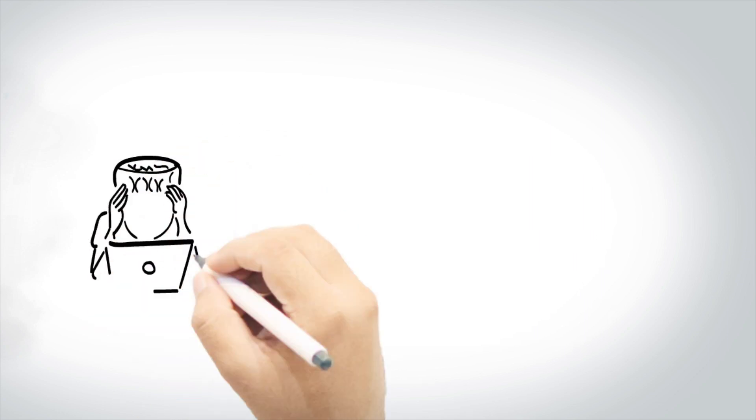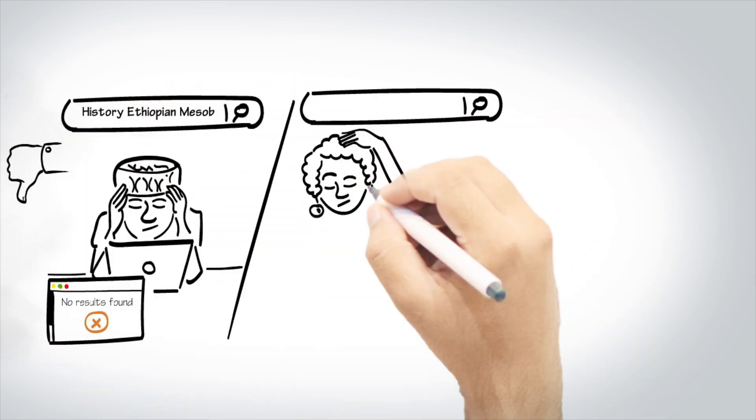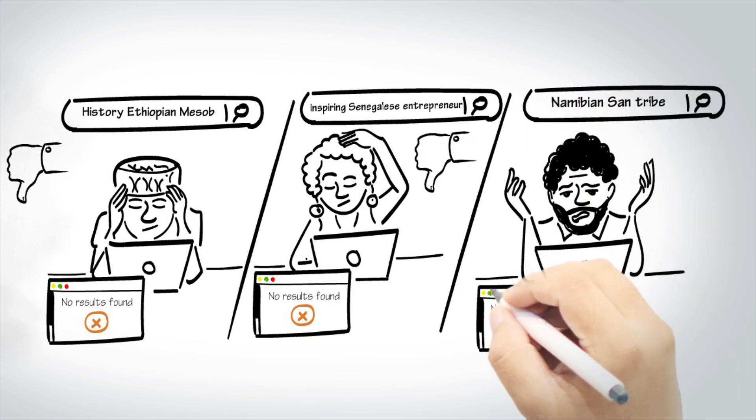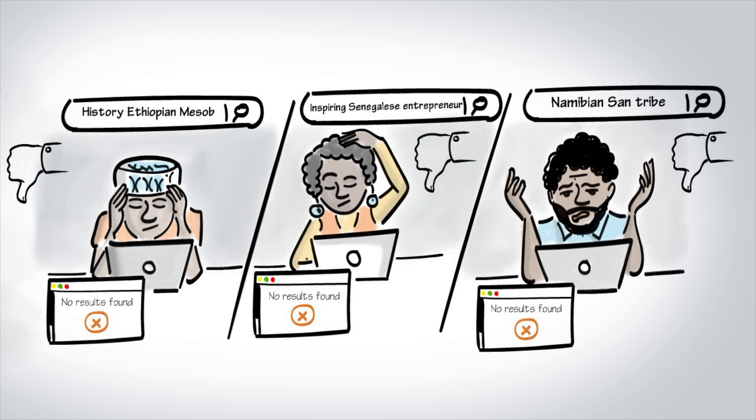Although Shimsu, Orma, and Kabali live in different countries and lead different lives, they all struggle to find in-depth indigenous content to educate themselves and the people around them.